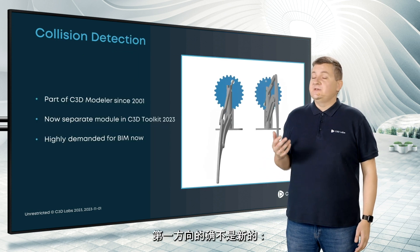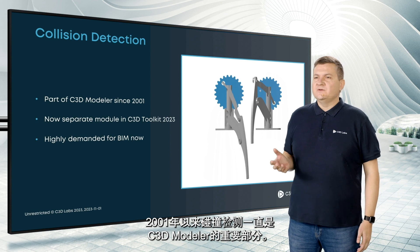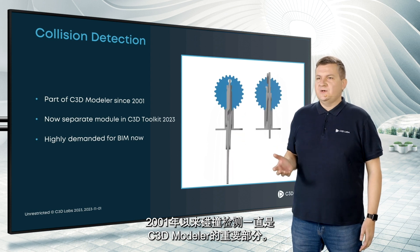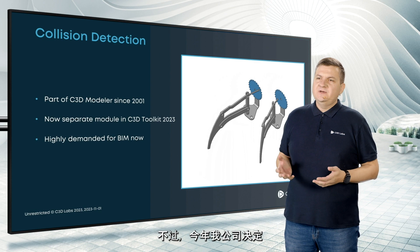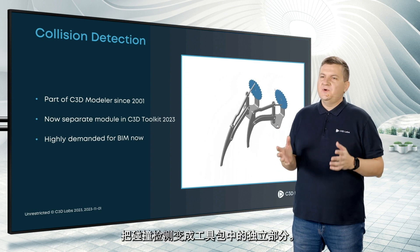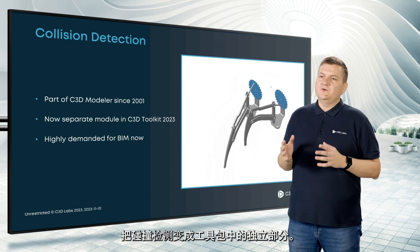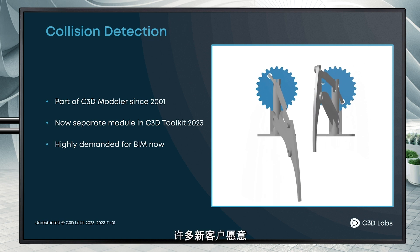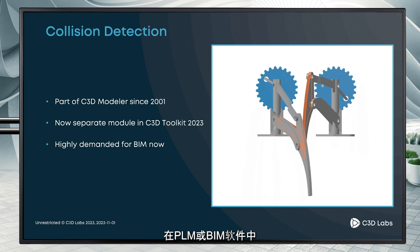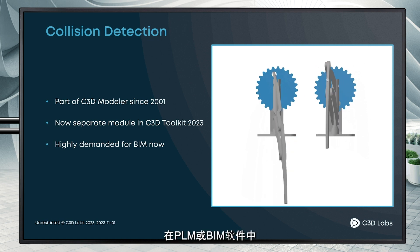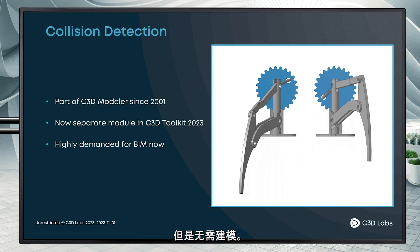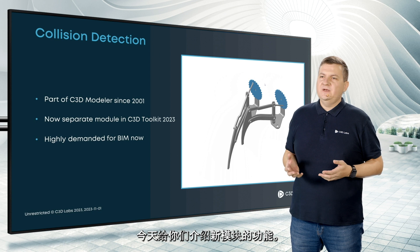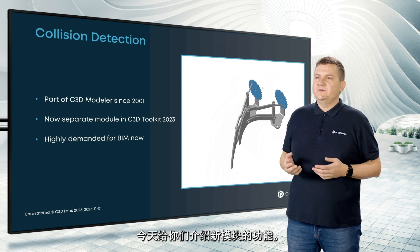The first direction is not entirely new. Collision detection was part of C3D Modeler since 2001, but this year we decided to make it a separate part of our toolkit. The reason is simple: many new customers want to use collision detection in their PDM or BIM software where they don't use Modeler. What the new module can do, Sergey Belov will tell you today.